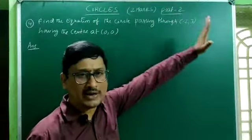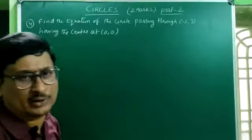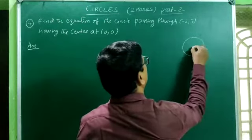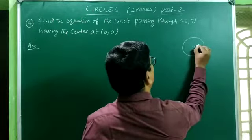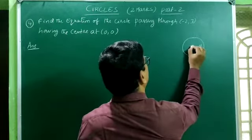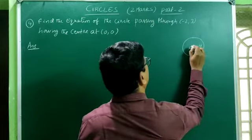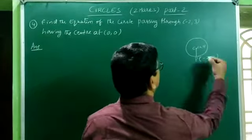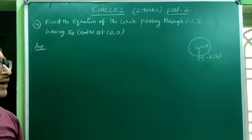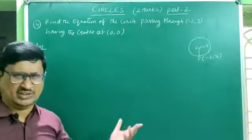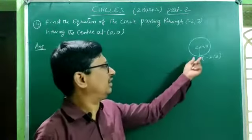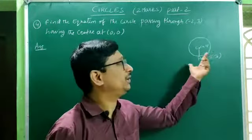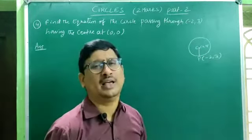The circle passes through the point (−2, 3) and the center is (0, 0). Center is denoted C and P is the point (−2, 3). The distance CP is the radius, and once we know the center and radius we can find the equation of the circle.